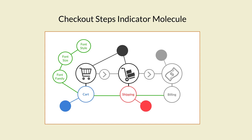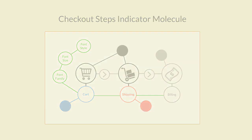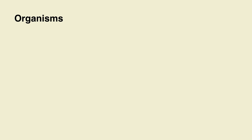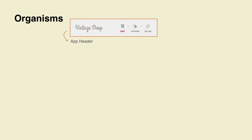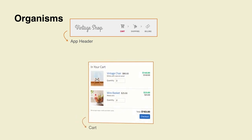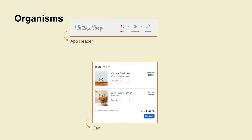As in nature, when interfaces grow in complexity and molecules bind together, the results are organisms. These organisms translate in the UI as defining sections of the application, and are more complex and contain more interactions.